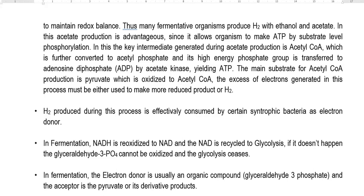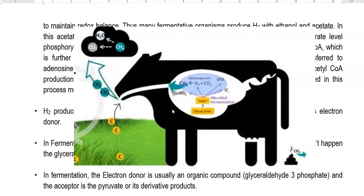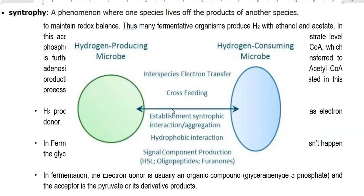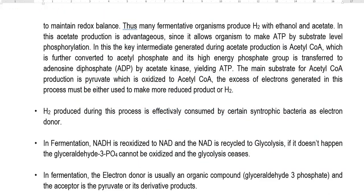The key intermediate generated during acetate production is acetyl-CoA, which can be further converted to acetyl phosphate, and its high-energy phosphate group can be transferred to ADP by using the enzyme acetate kinase — a substrate level phosphorylation process. The main substrate for acetyl-CoA production is pyruvate, which is oxidized to acetyl-CoA. The excess electrons generated during this process must be used to make more reduced products or hydrogen. The hydrogen produced during fermentation can be consumed by other organisms in the community, such as syntrophic bacteria that use hydrogen as an electron donor. In the fermentation process, NADH is re-oxidized to NAD, and NAD is recycled back into the glycolysis process.